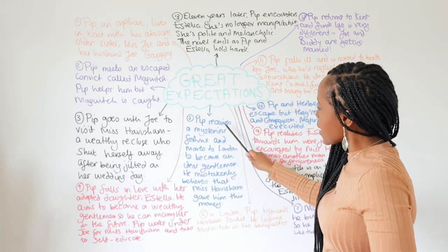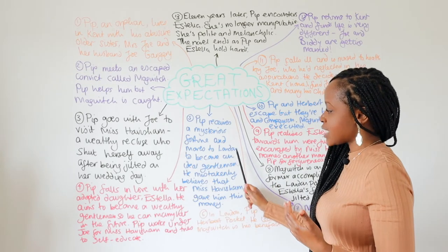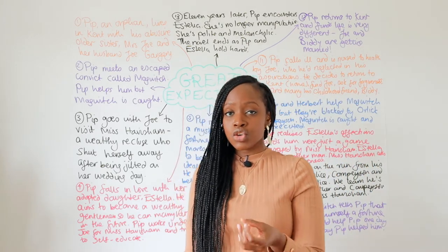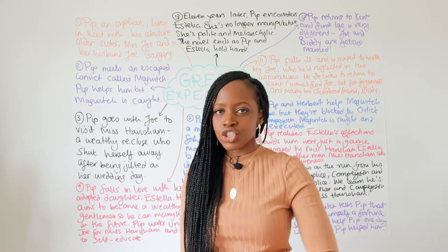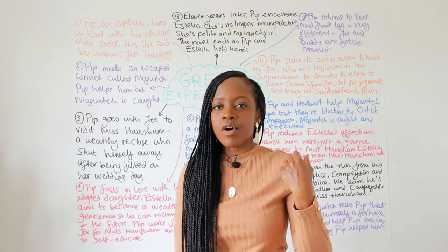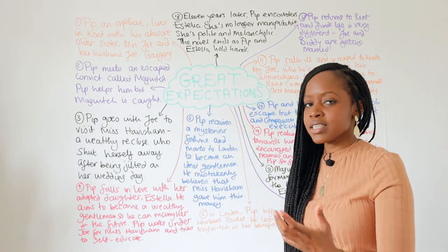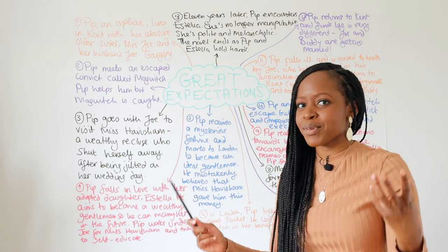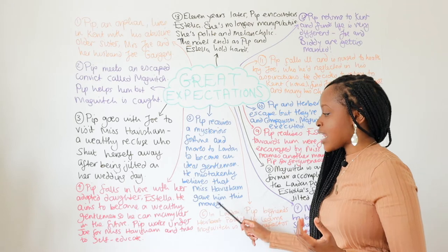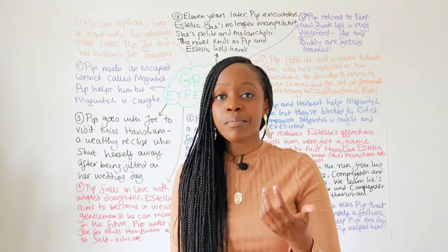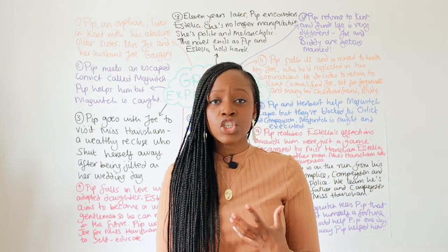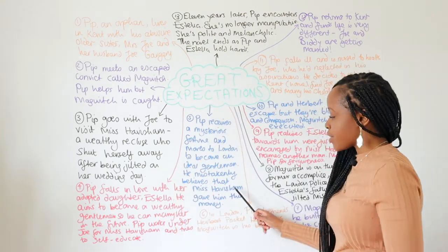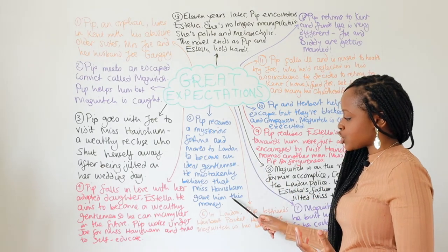Pip receives a mysterious fortune several years later, and he decides to move to London in order to become an ideal gentleman. One of the aspects of being a gentleman during Victorian society was being very well-educated and having certain manners. So Pip decides to move to London and teach himself to become an ideal gentleman, because he now has this big fortune too. He also mistakenly believes that this fortune he has received is from Miss Havisham. He is naive — he thinks Miss Havisham has very good intentions, and he believes that she maybe wants to support his love and relationship with Estella. Therefore, he thinks this mysterious fortune is from Miss Havisham, and that she gave him this money.